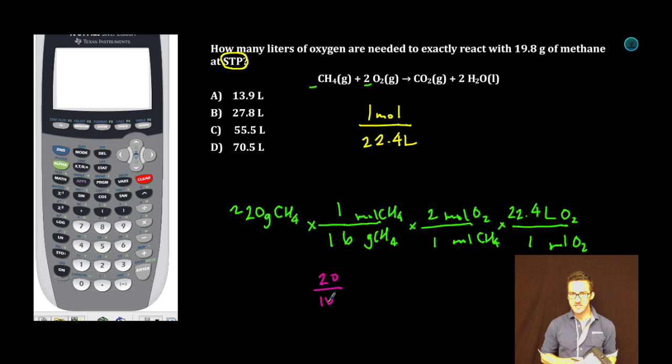20 over 16? I can reduce that further to five over four, which is 1.25. That's my number of moles of CH4.